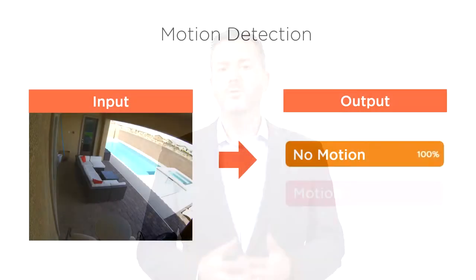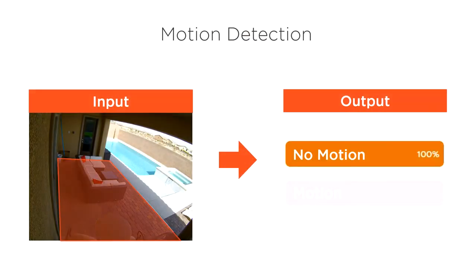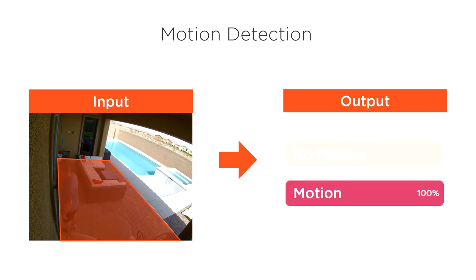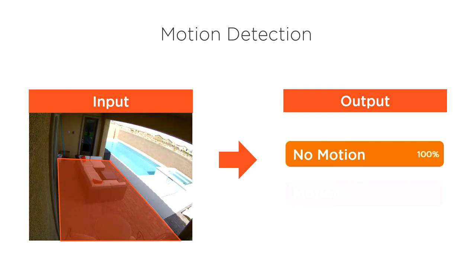For example, we can determine if anything is moving within a masked region of a security video. We provide the model with a video and a polygon mask for the detection region as input, then the model produces a motion label and a confidence score for each frame as output.